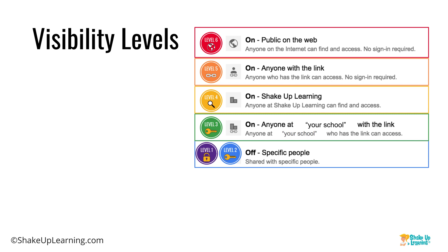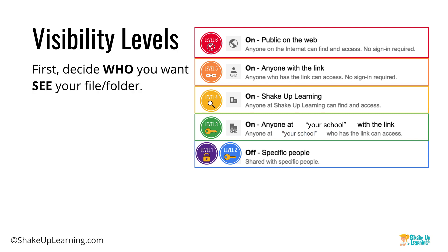Let's walk through the visibility levels — the first step of deciding who you want to see your folder. I have broken this into six levels. If you're in your personal account, you're missing the ones in the middle, so these mid-levels are specific to Google for Education. Level three and four — anyone at your school with the link, or anyone at your school can find and access — are specific to Google for Education.